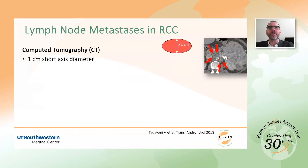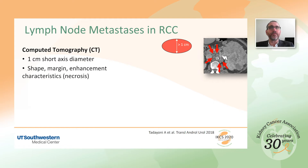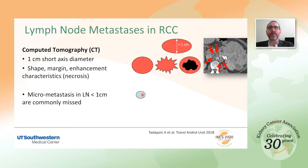CT is the most common imaging modality for staging renal cancer. A lymph node with a short axis diameter greater than 1 cm is considered abnormal. We also look for other features, like a rounded shape as opposed to oval, irregular margins, or lack of enhancement in the presence of necrosis. The main challenge of imaging is the detection of micrometastasis; if the lymph node is not enlarged, we can rarely make the diagnosis.